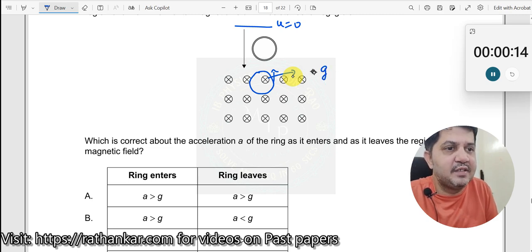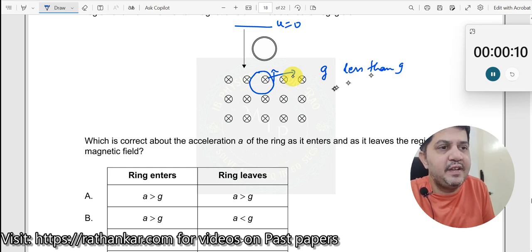Which means the acceleration at the entry will not be equal to the value of g, which will be less than g when it enters.